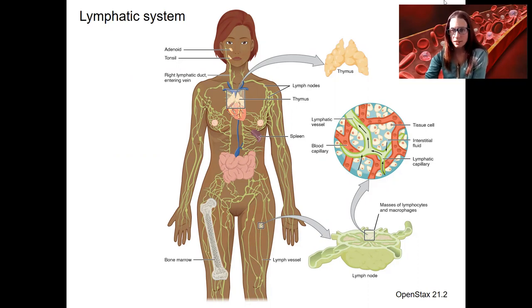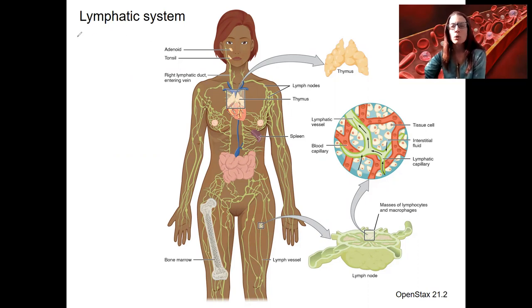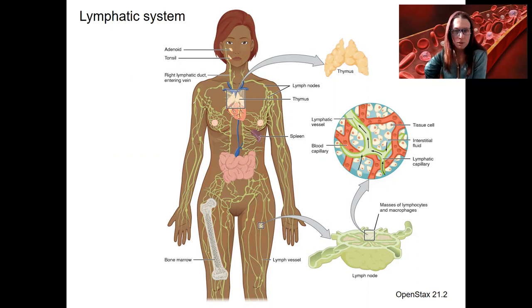Anatomy of the lymphatic system, which of course relates to its function. First of all, know that there is lymphatic tissue throughout almost all of your organs — that is really important. So when we're talking about structures, you can see the vessels, but it's not obvious in this picture. There is diffuse lymphatic tissue throughout the body.